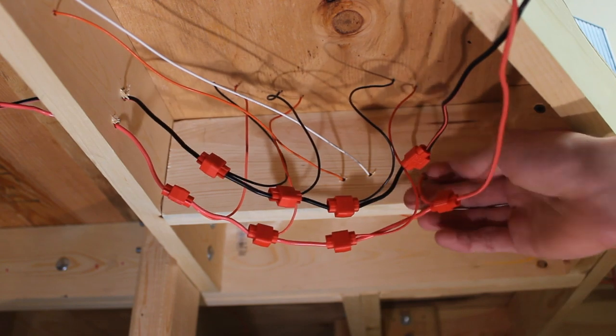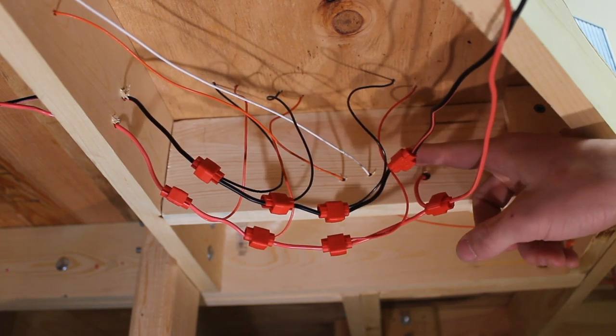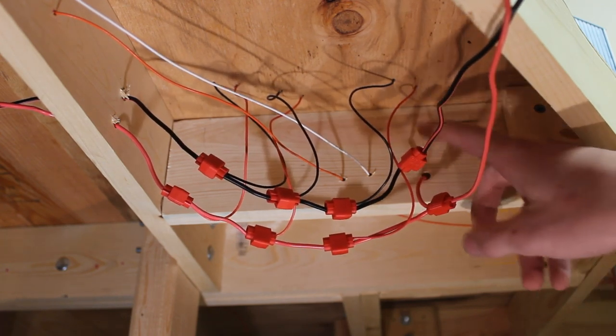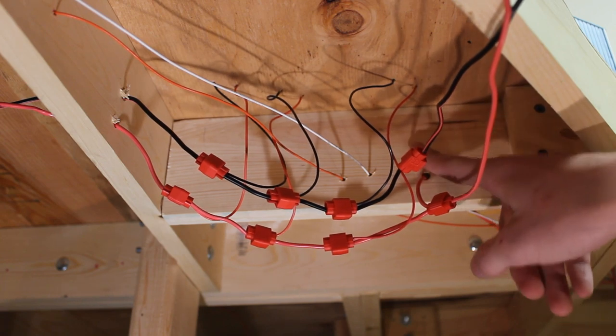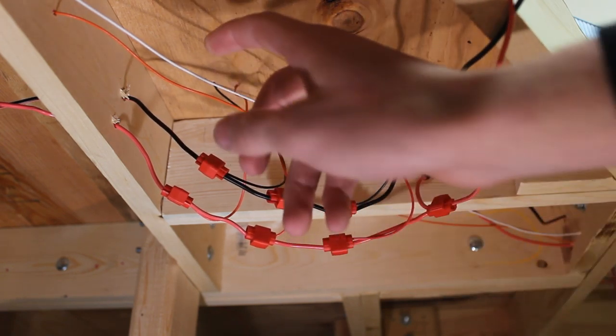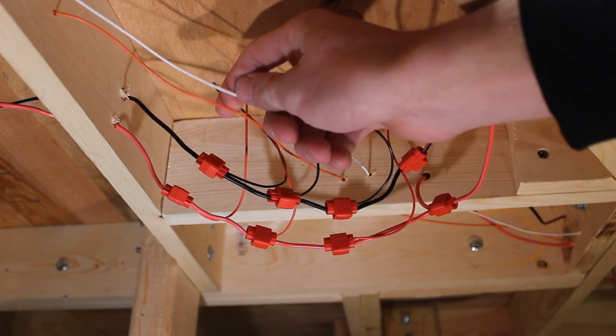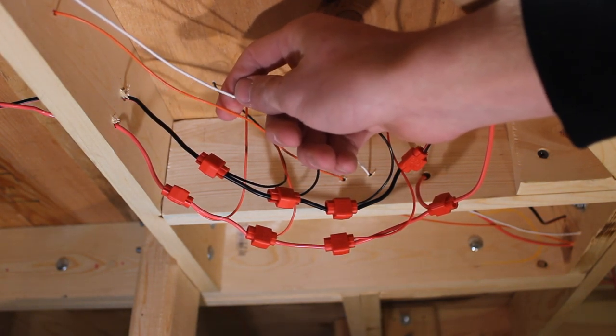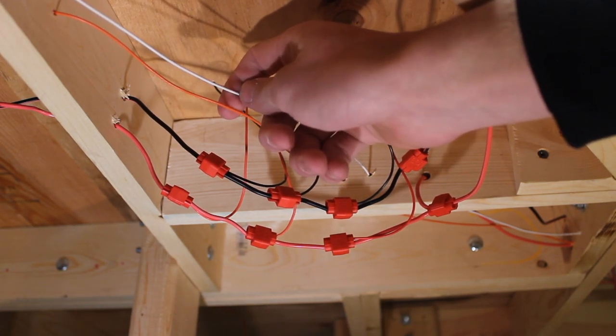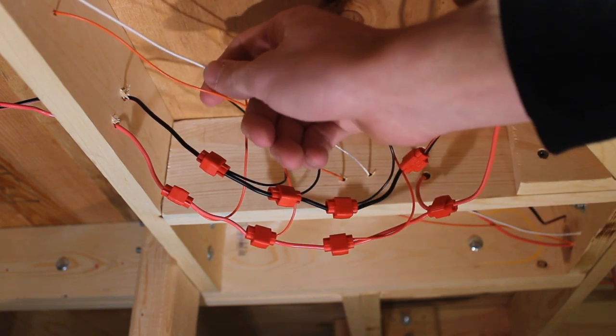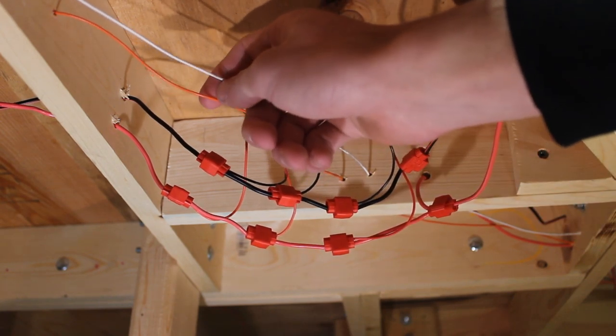So here I have two more wires that are the 18 gauge bus wires running to a different part of my layout. And these two are another set of bus wires that are going to be used to power my tortoise switch machines. And this will be the same way. I'll have feeders running off of this to power those.